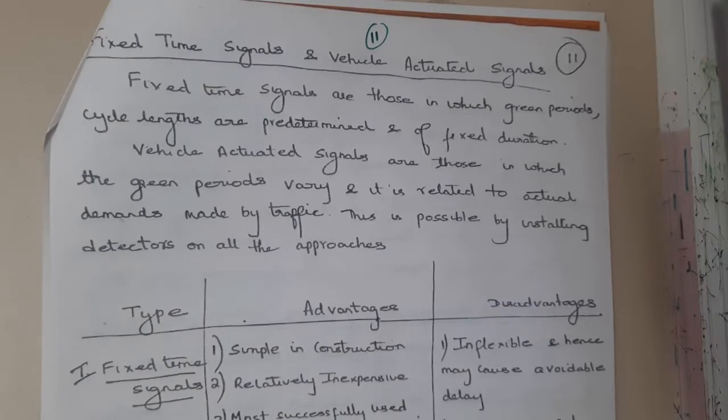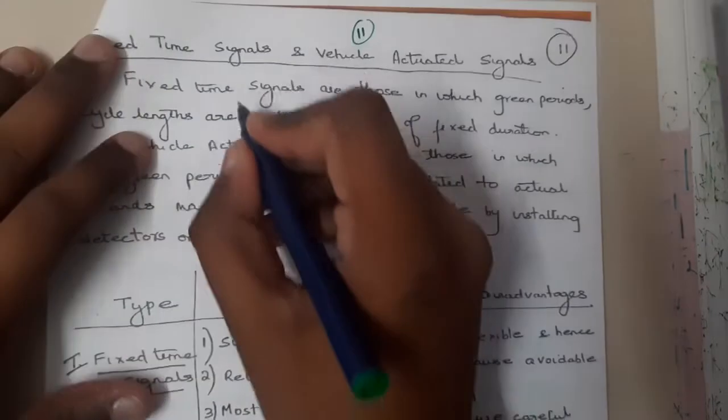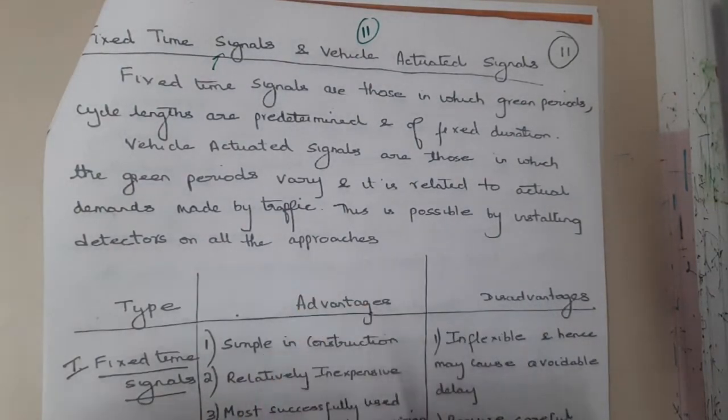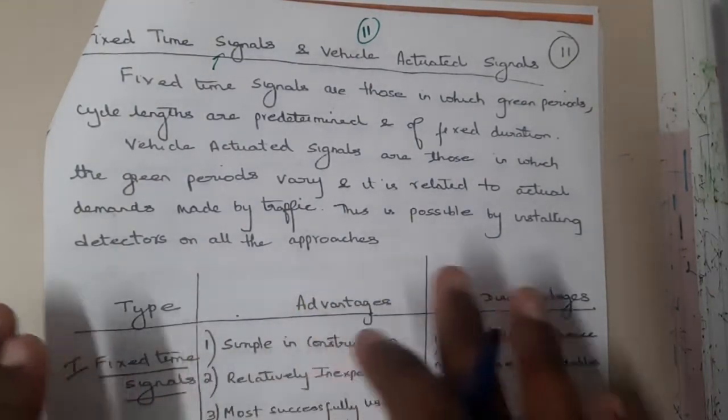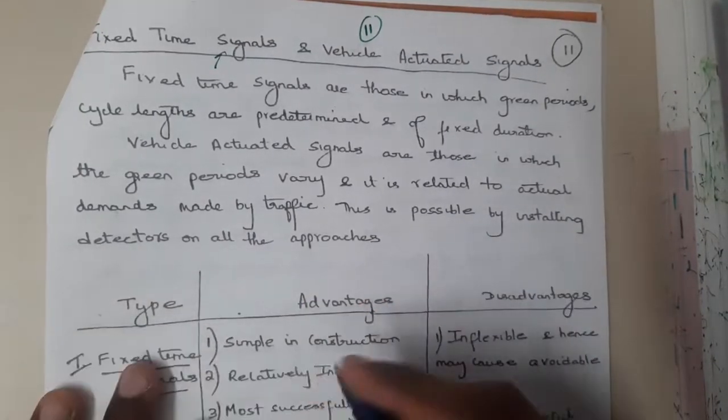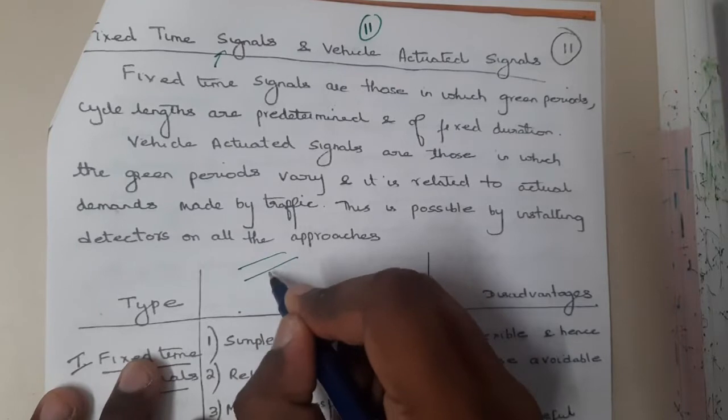We can divide the time of signals based on two parameters. One is fixed time, where the time is completely fixed and it will give that respect only. It will not check the consideration of traffic or anything; it will directly give based on that particular timing.